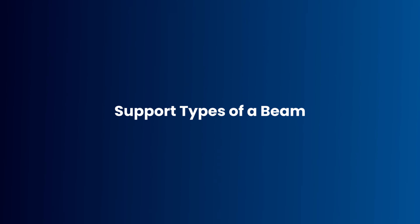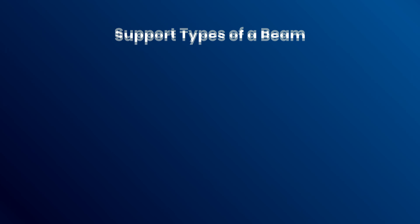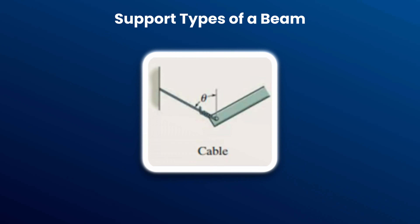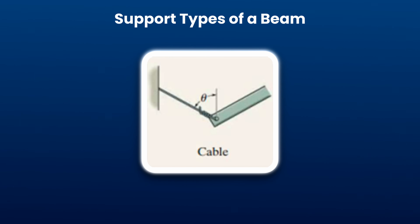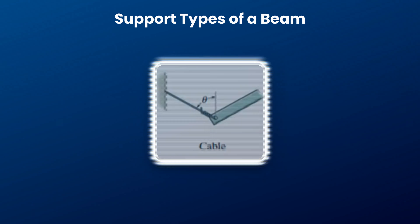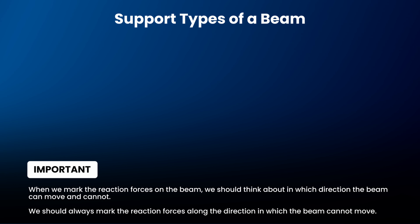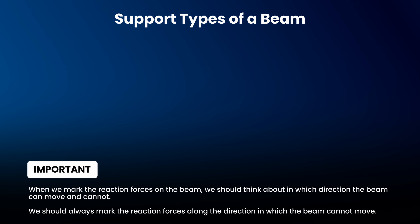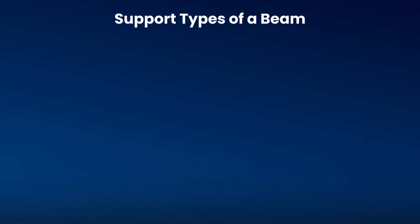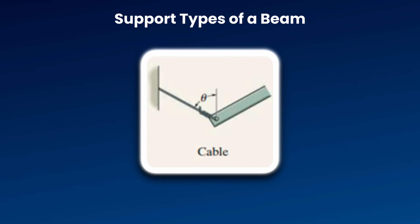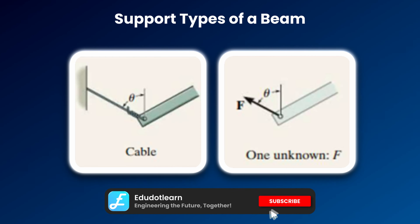You should know the basic support types for a beam and how to mark the reaction forces for each type. The first one is the cable support. We should think about in which direction the beam can and cannot move, and always mark the reaction forces along the direction in which the beam cannot move. In this case, we mark the reaction force along the cable.